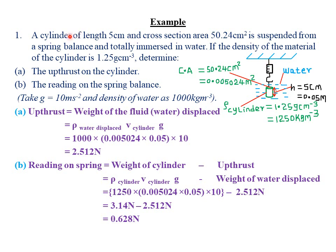We are told that we have a cylinder which has a length of 5 cm. I want to convert it into the SI unit of length, which is meters. We know that 100 cm equals 1 m. So 5 cm will be 5 cm over 100 cm times 1 m, which gives 0.05 meters.